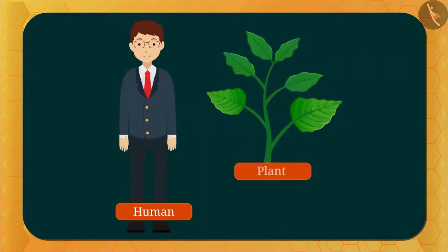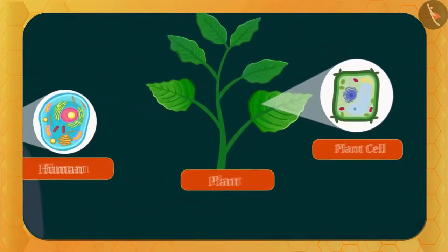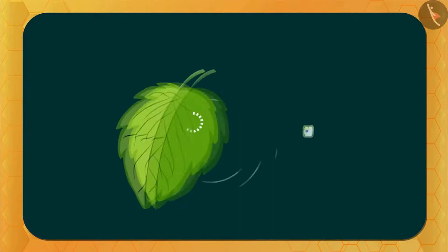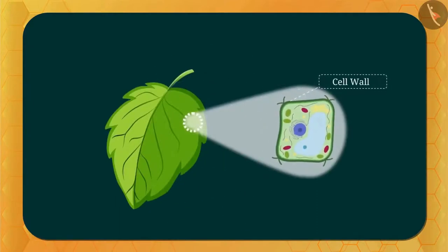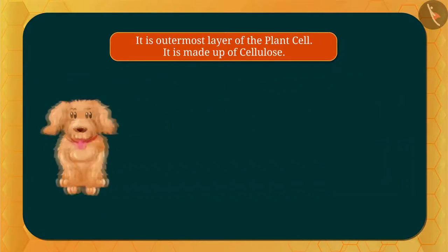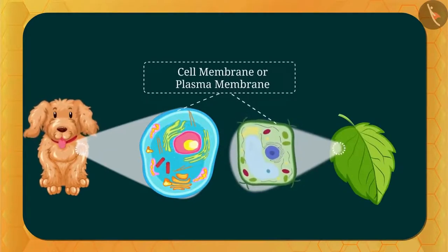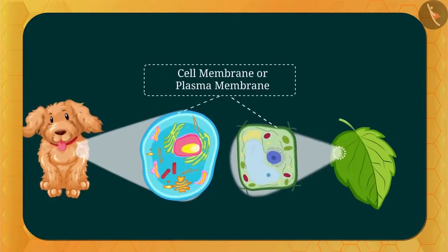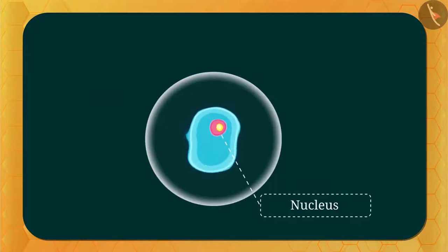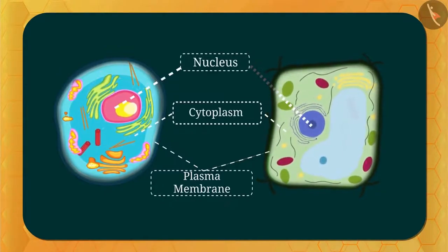This is a human and this is a plant. After zooming in, the cell you are looking at is an animal cell, and this is a plant cell. The outermost layer of the plant cell is called the cell wall, which is found only in plant cells and not in animal cells. The layer found in both animal and plant cells is called the cell membrane or plasma membrane. The spherical structure you can see is called the nucleus. The area between the nucleus and the plasma membrane is called the cytoplasm.